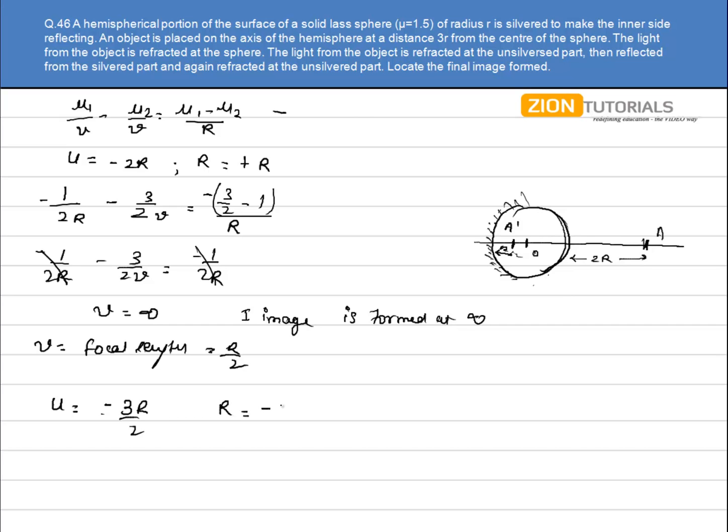r is -r. Substitute the value: I have μ₁ as 3/2 over here, -3/2r - 1. V is equal to μ₁ that is 3/2 - 1, that is -r. So what I have over here is -1/r = -1/v - 1/2r. So on solving this equation I get the value of v as -2r.